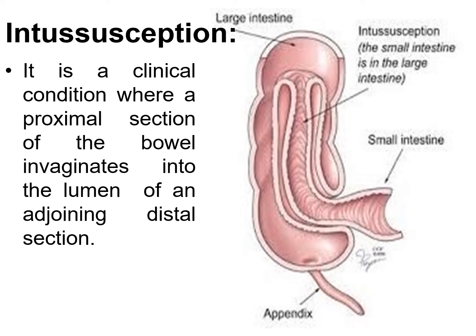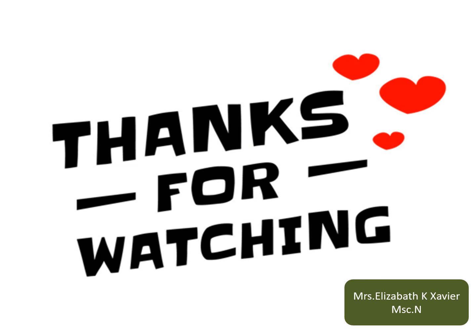There is another condition called intussusception, where a proximal section of the bowel invaginates into the lumen of the adjoining distal section — for example, the ileum going into the lumen of the large intestine, also called telescoping. That is all about the anatomy of the large intestine. Thanks for watching — please subscribe and share.